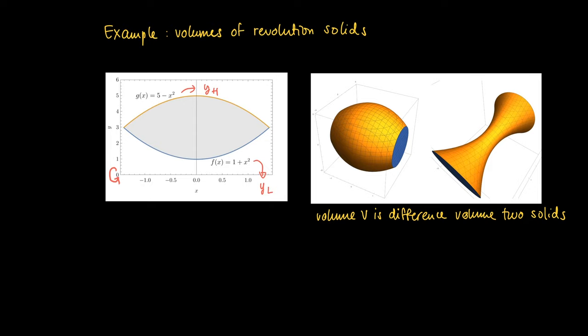We have an upper function and a lower function, which we call yh and yl. yl is the lower part, which is f. We get the volume by subtracting two revolution solids: one specified by the radius given by the upper function yh, and the other by the lower function yl.